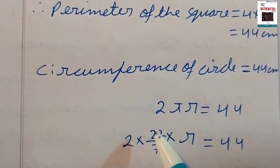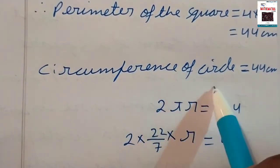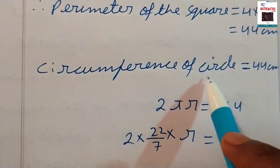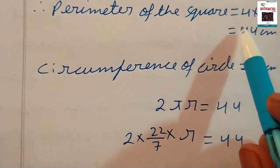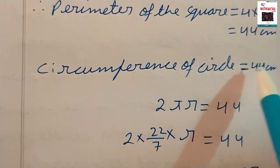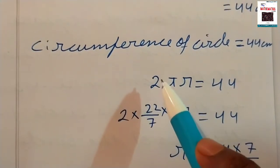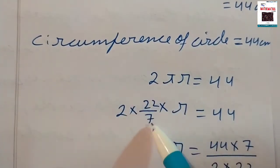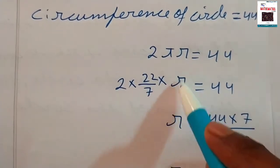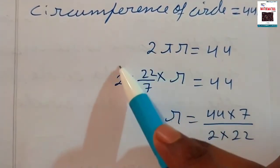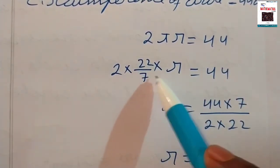Now we use the circumference formula to find the radius. The circumference of the circle equals 44. Using the formula, 2πr equals 44. Bringing the numbers to the right-hand side, we can solve for the radius.